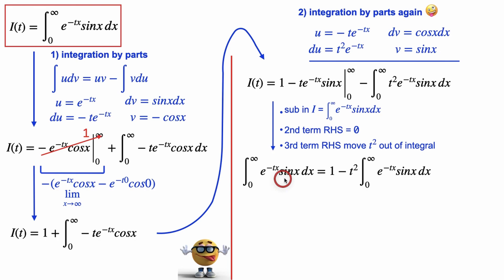So if we do those three things, here's our substitution here on the left. This is 0, so this term is gone. And I brought the t squared out of the integral, just like that.